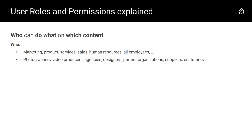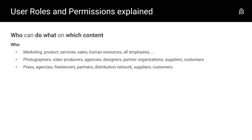Next to giving access to all employees, for people outside of your organization, think of people involved at the creation part of content: photographers, video producers, agencies, designers, partner organizations, suppliers, and sometimes even customers. In publishing your content, externals could also be involved — press agencies or freelancers that help with your website, social media, or other marketing communication activities. Your organization might also work with a distribution network, suppliers, customers, university students, or others doing research — and this list is far from complete.